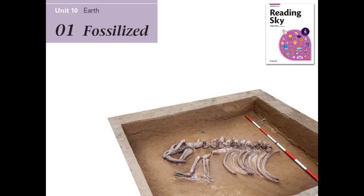Imprints are impressions made by organisms in wet mud. The impressions are preserved when the mud dries and hardens. Certain imprints, like hardened tracks and footprints, can give scientists an idea of an animal's behavior. Molds are made when organisms are buried in mud that hardens into rock. Years later, water dissolves the organisms and leaves shapes, or molds, inside of rocks.